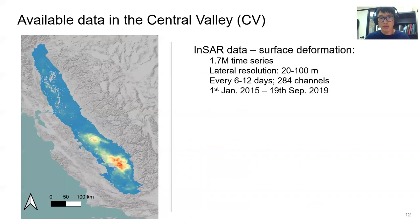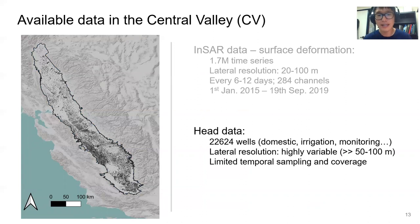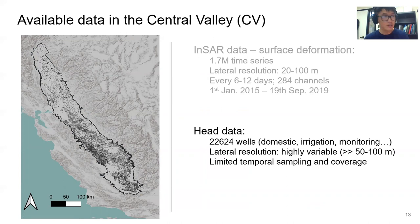For the InSAR data in the Central Valley, we have about 1.7 million time series covering most of the valley. Lateral resolution is about 20 to 100 meters, and we measure every 6 to 12 days, with a total of 284 time steps between 2015 and 2019. For head data, we have about 20,000 wells including domestic, irrigation, and monitoring wells, but the temporal sampling and coverage are very limited, providing motivation to develop a new monitoring approach.